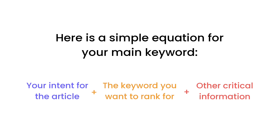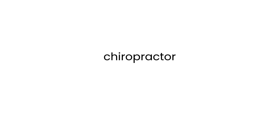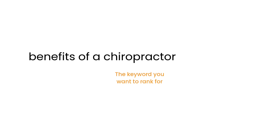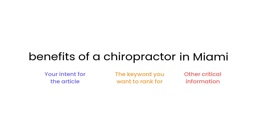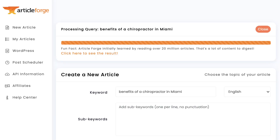As an example, let's go back to the keyword chiropractor. Let's say we want to write about a chiropractor for a company that offers this service in Miami. Chiropractor may be the main keyword, but that is way too broad. So let's figure out what we want the intent for the article to be — in this case, maybe we want our article to discuss the benefits of using a chiropractor. Since the service is being offered in Miami, let's consider that to be critical information. So by combining the intent — benefits — with the primary keyword — chiropractor — and the additional important information — Miami — we end up with: benefits of a chiropractor in Miami.